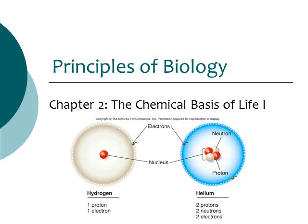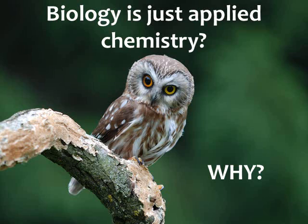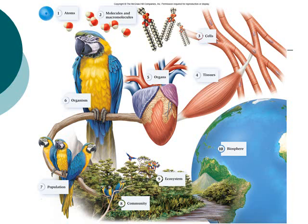This is part one of three about chapter two, called the chemical basis of life. In this chapter we're going to talk about chemistry. Biology is just applied chemistry — you're probably wondering why we have to talk about chemistry. In order to understand how cells work, you need to understand the level below cells, which includes molecules and atoms, and that's chemistry.